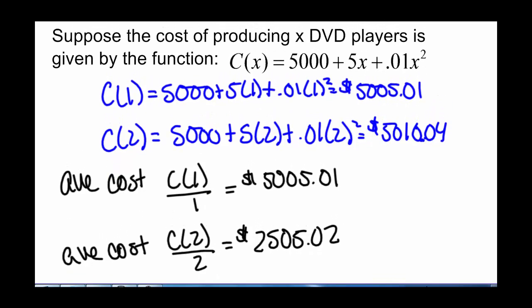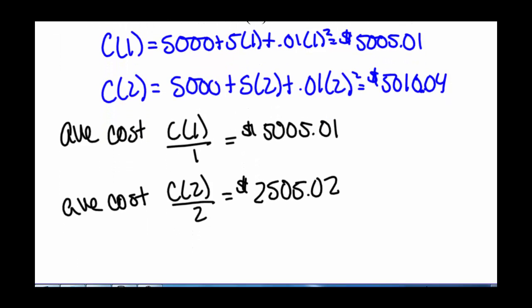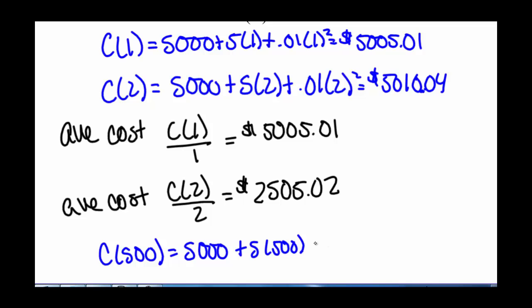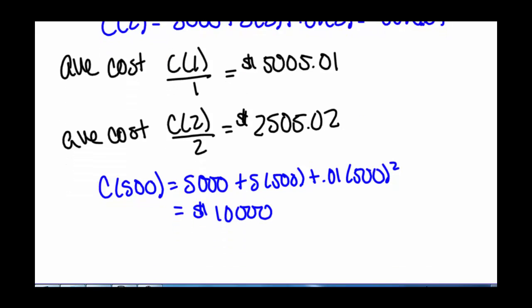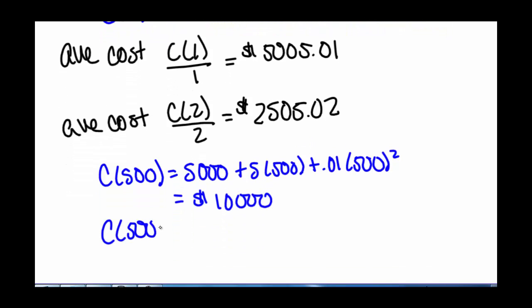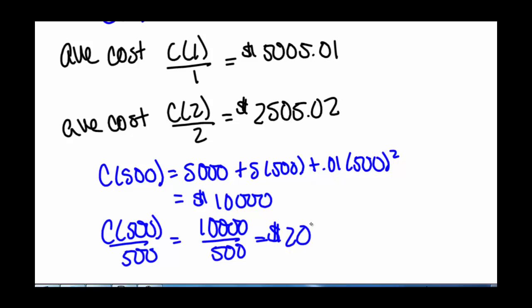Now let's find the average cost of producing 500 DVD players. C(500) = 5,000 plus 5 times 500 plus 0.01 times 500 squared, which gives us $10,000. So it costs $10,000 to produce 500 of them, but $10,000 divided by 500 is just $20. The average cost of producing 500 DVD players is $20, which means you can sell them for a lot less and still make a profit.